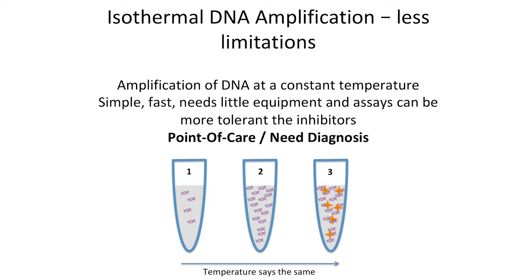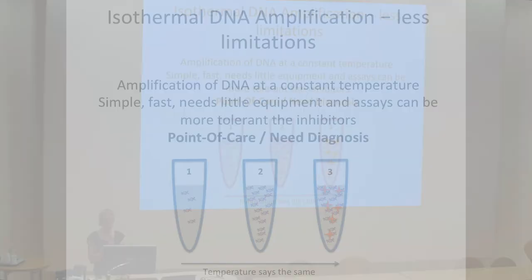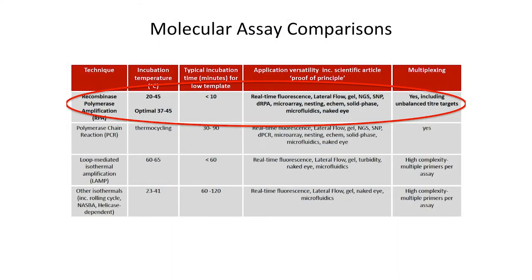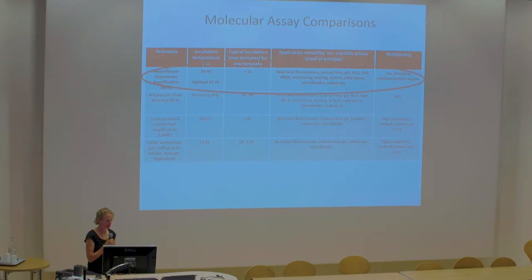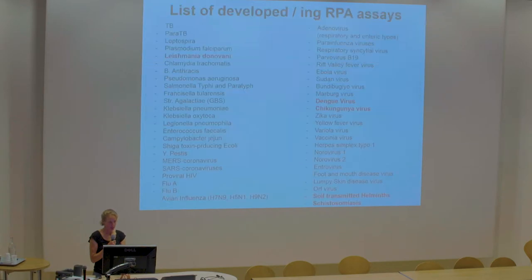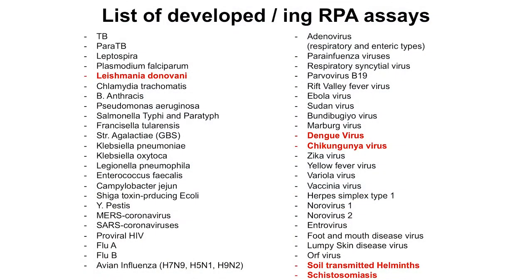Isothermal assays overcome some of those limitations of molecular diagnostics that need higher temperatures, and they can start to be thought of for use at point of care or point of need. This table shows some of those criteria we're thinking about: incubation time, whether they can be multiplexed, and how long they take. RPA is highlighted here — it needs a very low temperature, takes very quick time, can run in just 10 minutes, and can do DNA detection using multiple systems. RPA has been developed for multiple pathogens, with the NTDs highlighted in red. It's mainly cost and logistics that have prevented some from being taken forward commercially.